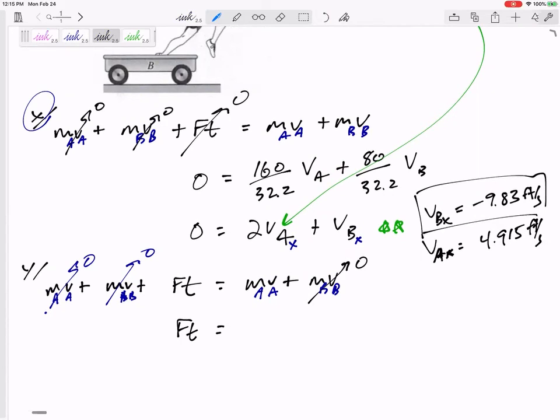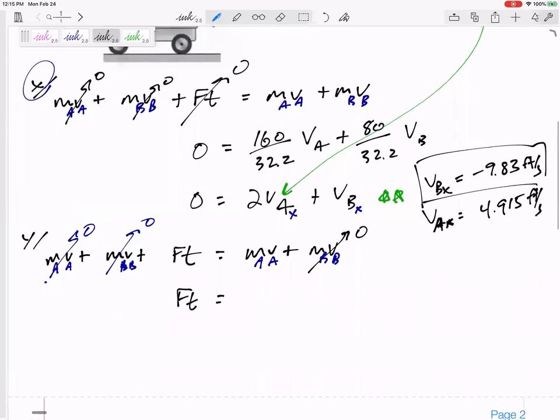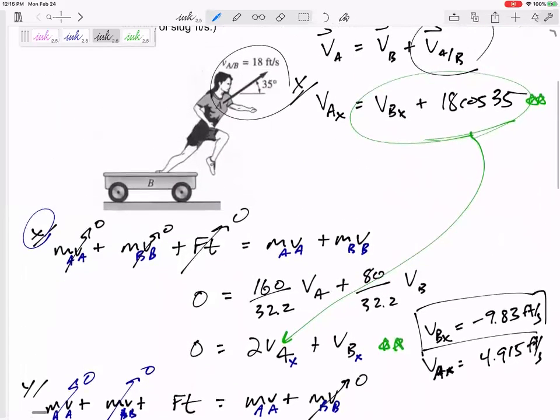There's no velocity of b in the y direction, assuming it doesn't pop up or anything like that. I think it just slides back to the left. So this would be 160 over 32.2 times va y. That equation doesn't actually help me solve for va y because I don't know the impulse. But I didn't use this - maybe some of you may have noticed or thought about this - I haven't used the relative equation in the y direction.